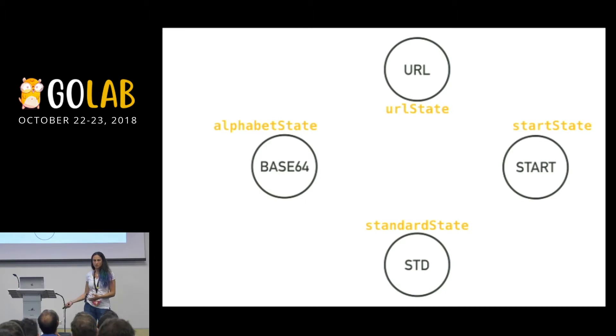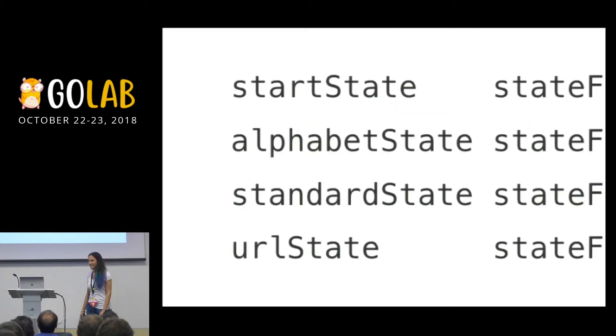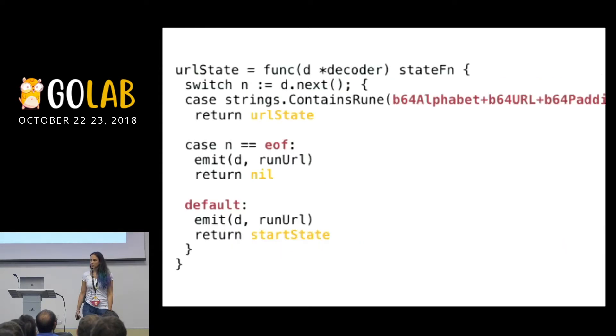We have the four states: the URL state, standard state for the two variants, the alphabet state for the alphanumeric part, and the start state, because you need a place to start. Okay, we define those in the code. And an example of an implementation of a state is this one. It's just a switch case. Nothing more. No for loops, no logic, no changes. Just a switch case. Based on what the input is, you return the next state. Nothing more.